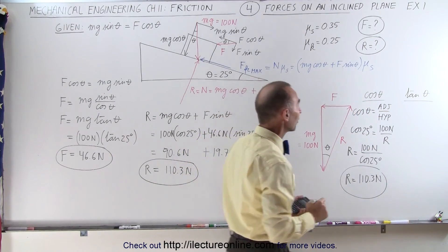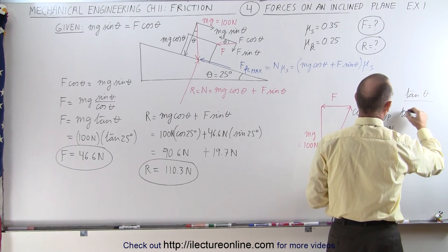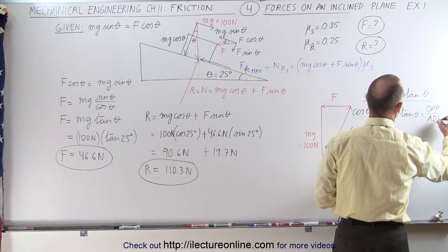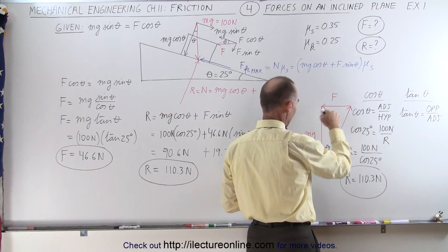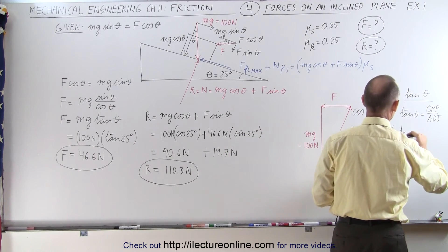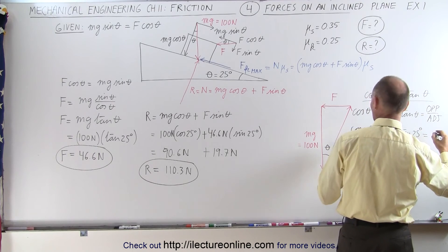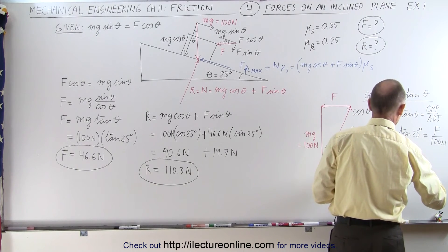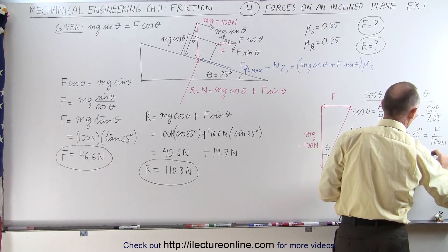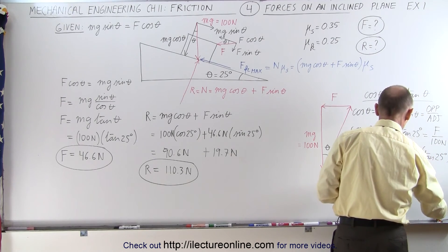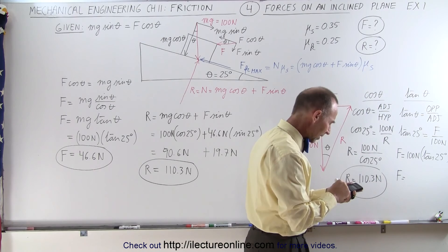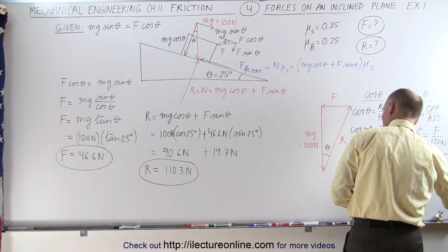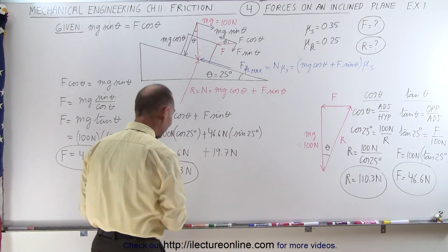We can also use the tangent of theta. The tangent of theta by definition equals the opposite side over the adjacent side. Here the opposite side is F and the adjacent side is 100 Newtons, so tangent of 25 degrees equals F over 100 Newtons. Therefore F equals 100 Newtons times the tangent of 25 degrees. With the calculator: tangent of 25 times 100 gives 46.6 Newtons — the same answer as before.